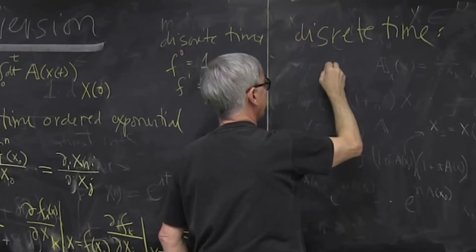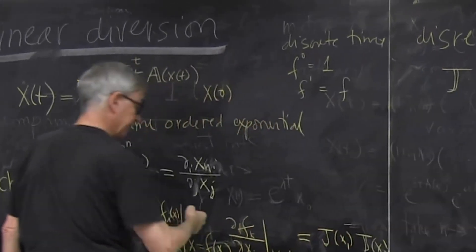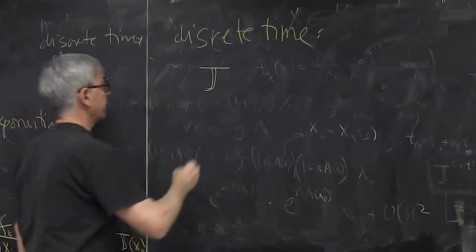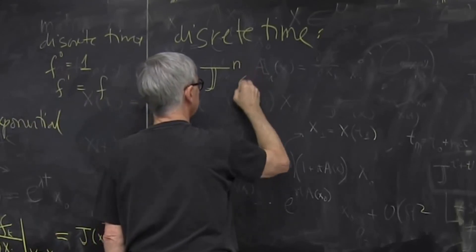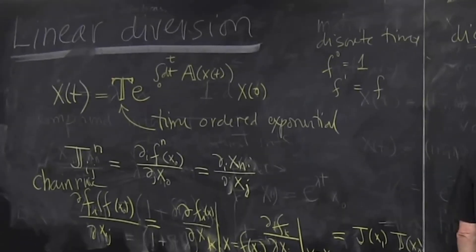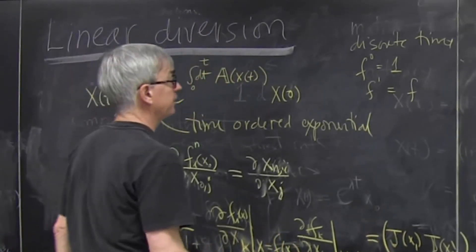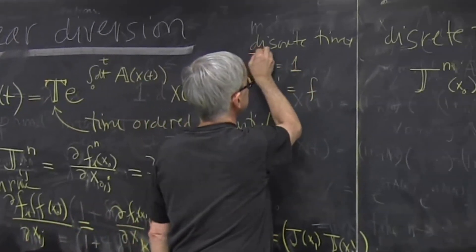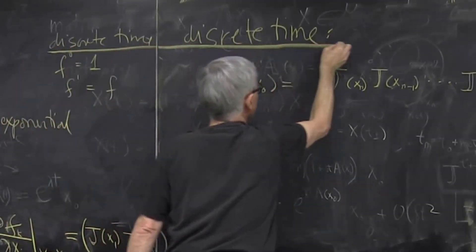So for discrete time, we have that if I iterate 10 times, it's obvious how it works. J_n of x_0 is J... so that's the discrete time situation. And now...